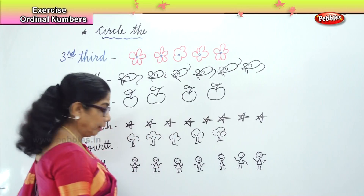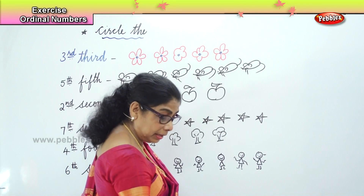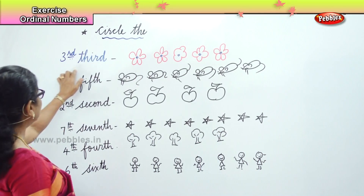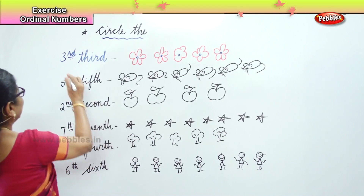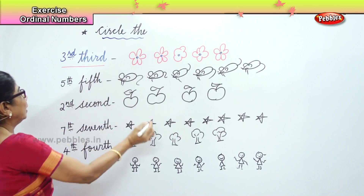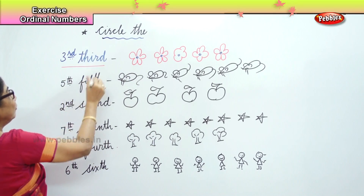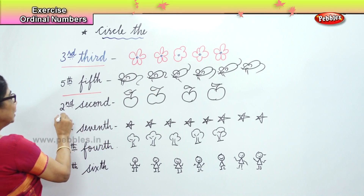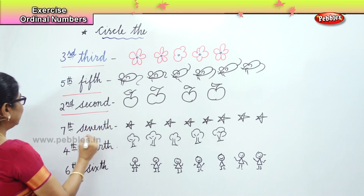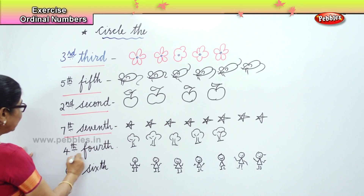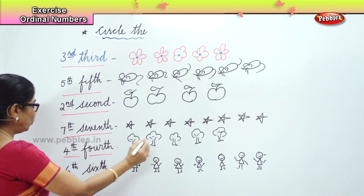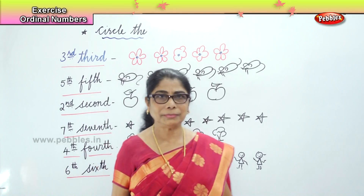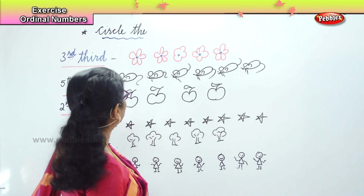Okay, here we have — I've done some diagrams for you and now what we're going to look at is: third flower, we're going to circle the third flower; the fifth mouse; the second apple; the seventh star; the fourth tree; and the sixth girl. Okay, now we're going to circle them all — let's see.